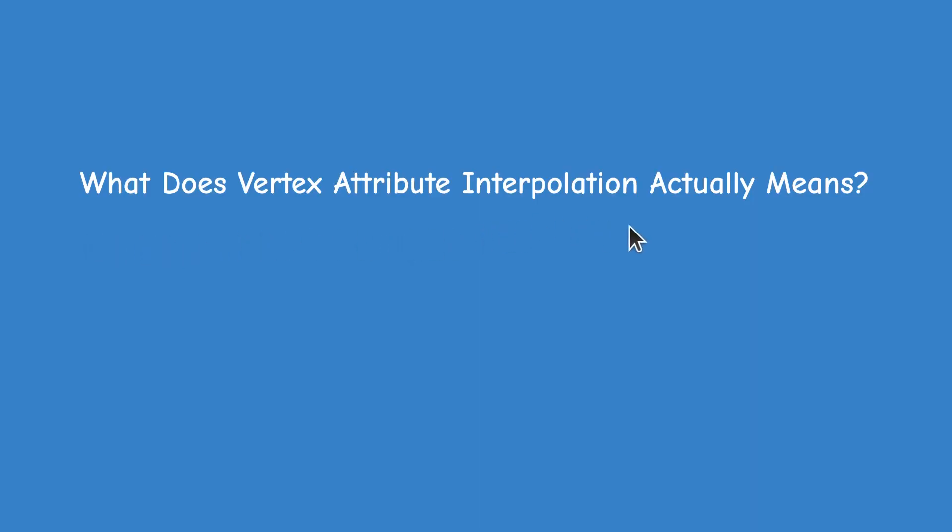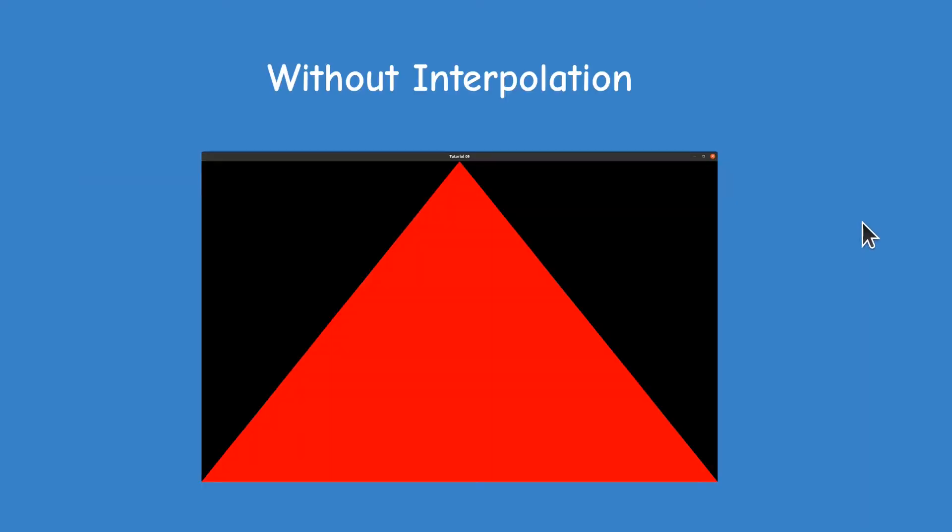What does vertex attribute interpolation actually mean? Let's see an example. All of our vertices so far have had a single attribute, a position. We use the position to rasterize the triangle, and if we wanted the triangle to have a color, we could do this by outputting the color value from the fragment shader. But this is quite limited. The entire triangle is rasterized using a single color.